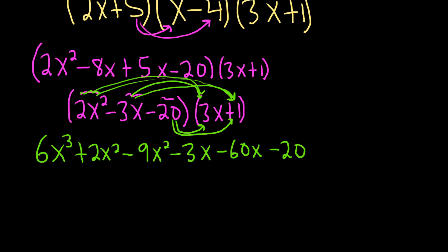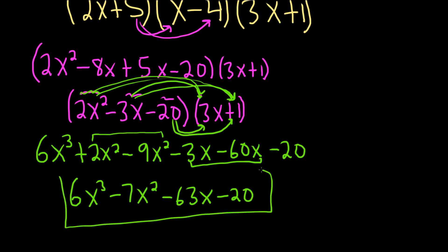So what are we left with? We have 6x cubed. So if we combine the x squared terms, that's going to give us minus 7x squared. And then combining these will give us minus 63x. And then we still have the minus 20 at the very end. And that should be the final answer. I hope this video has been helpful.